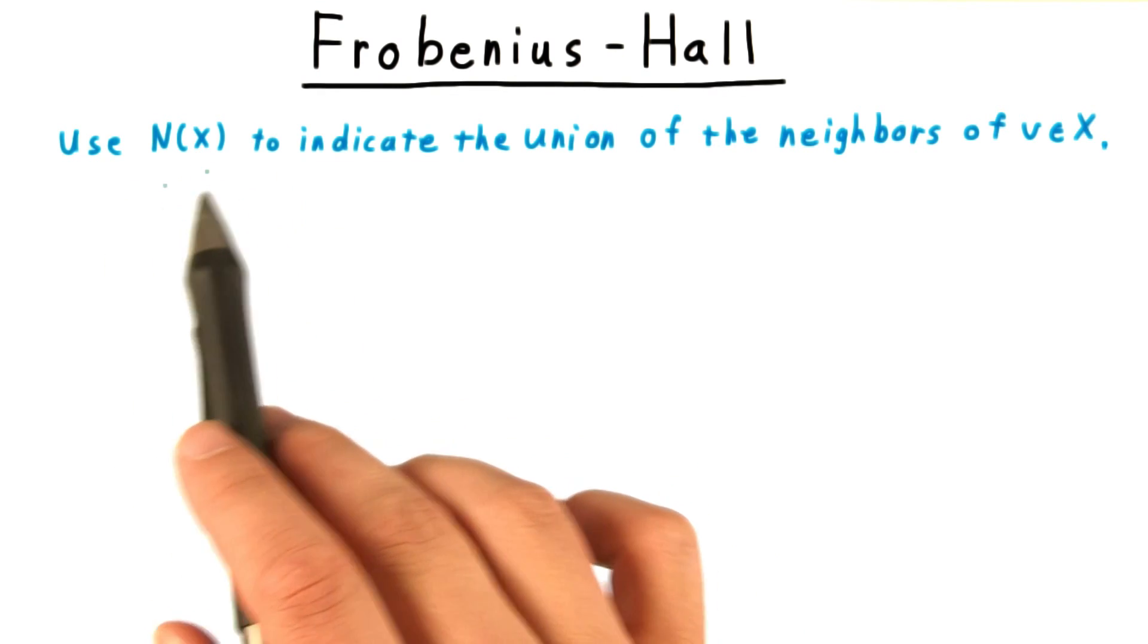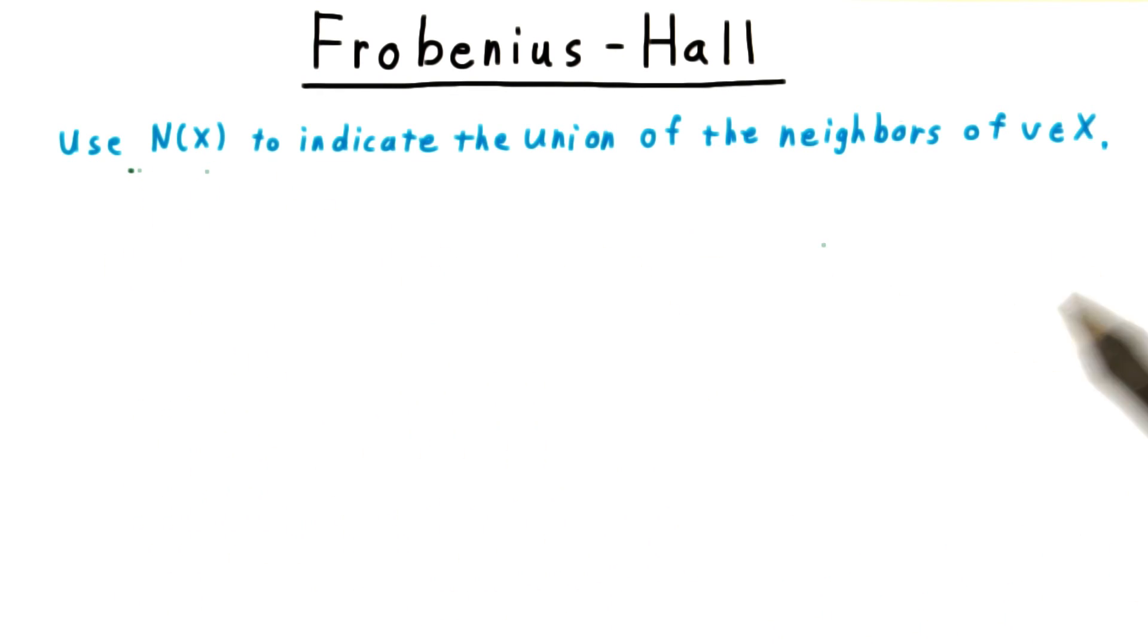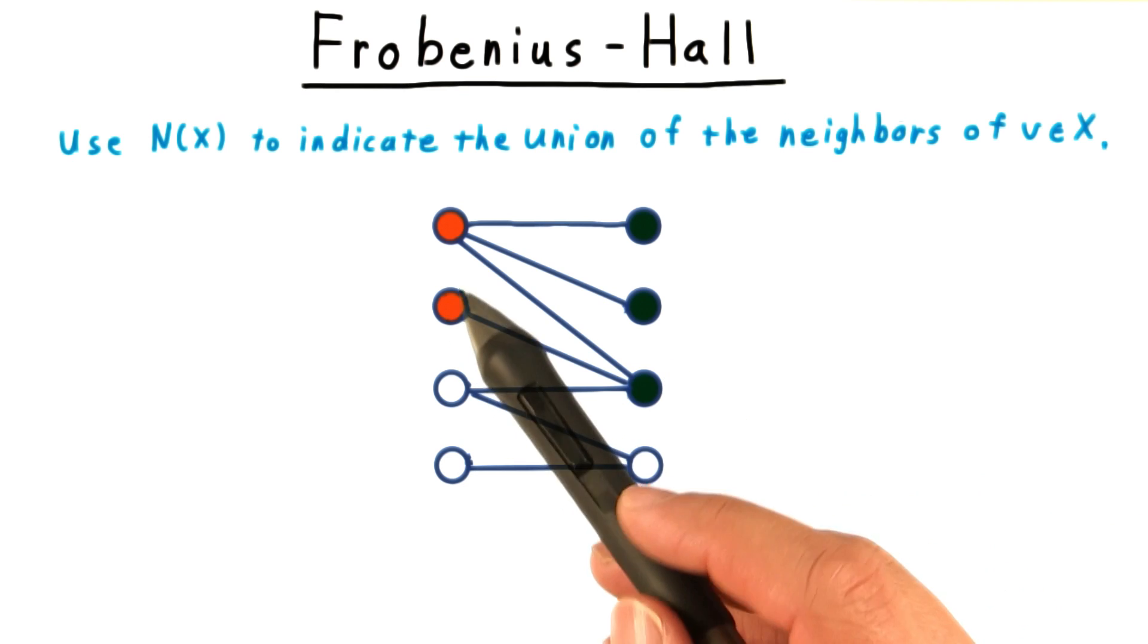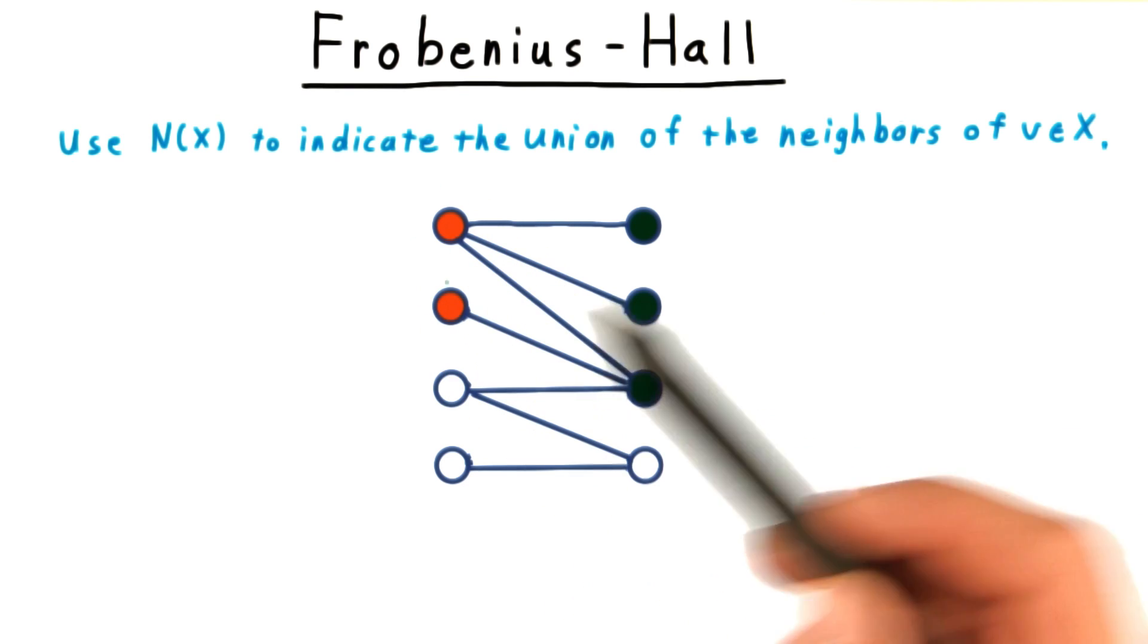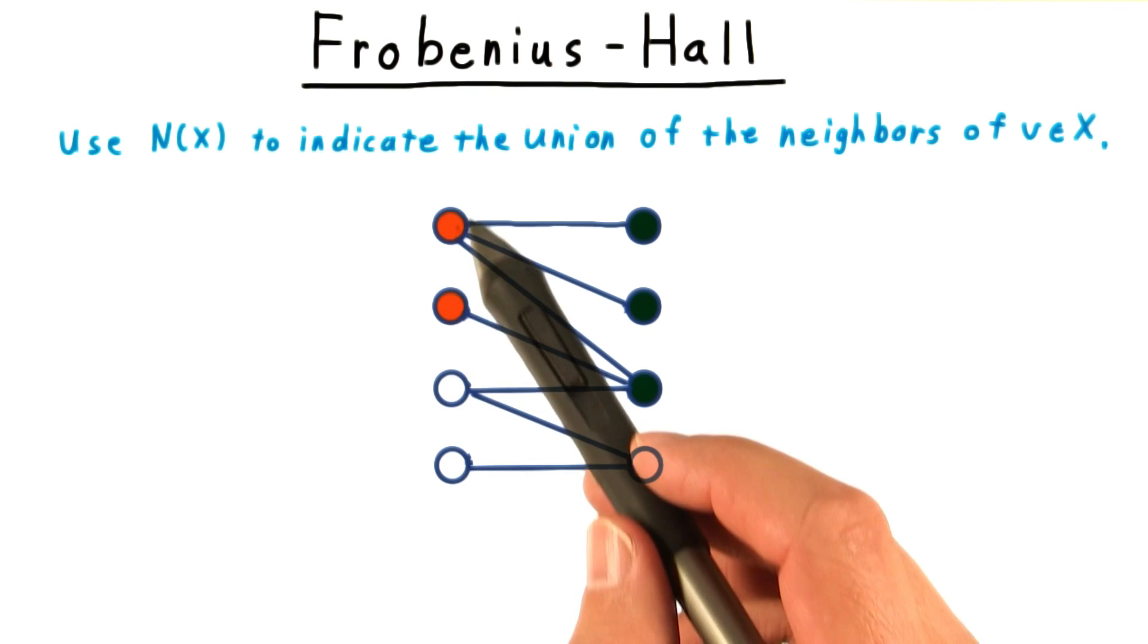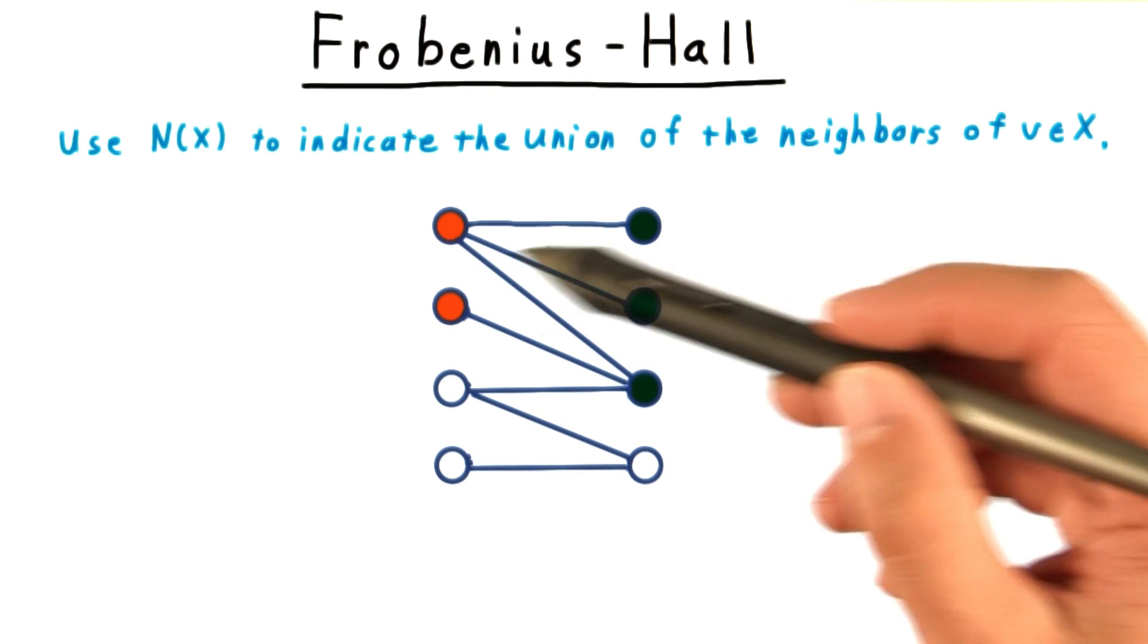For a subset of vertices, say x, we'll use N(x) to indicate the union of the neighbors of the individual vertices in x. If we consider this graph here, then the neighbors of the orange vertices will be the green ones. Note that if we call this x, then the size of the neighborhood of x is larger than x.